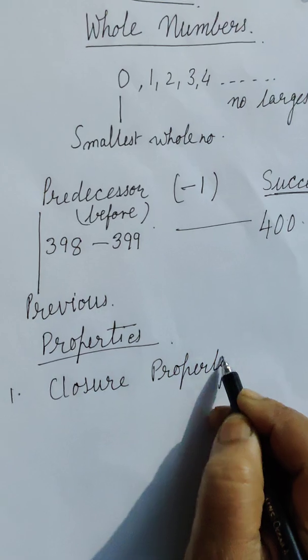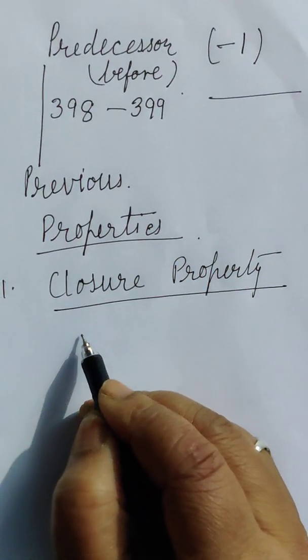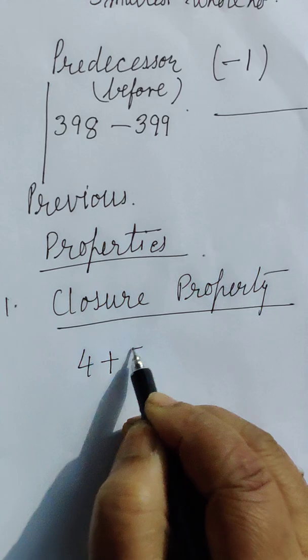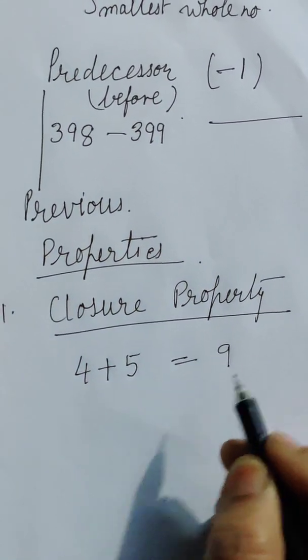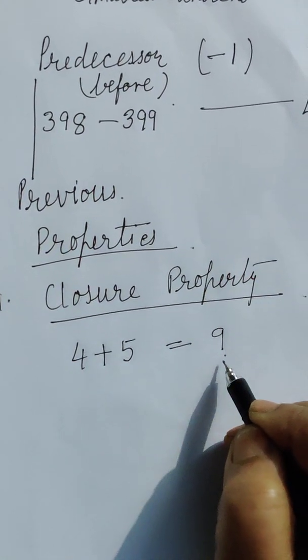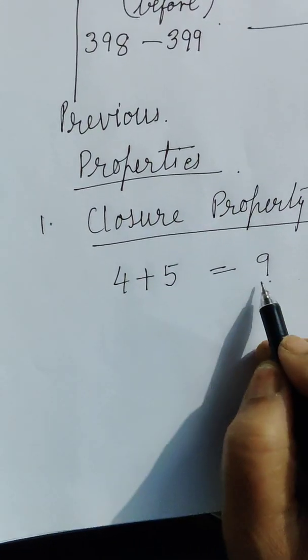What does this property tell? As far as addition is concerned, when we add 2 numbers, the answer is every time a whole number. When 2 whole numbers are added, the answer comes a whole number. 4 plus 5 is equal to 9.